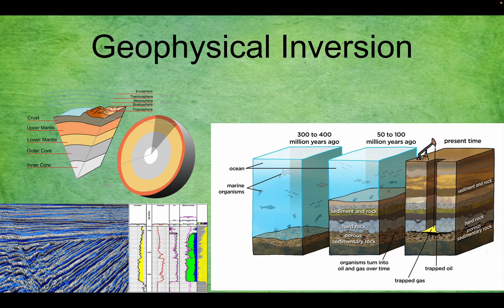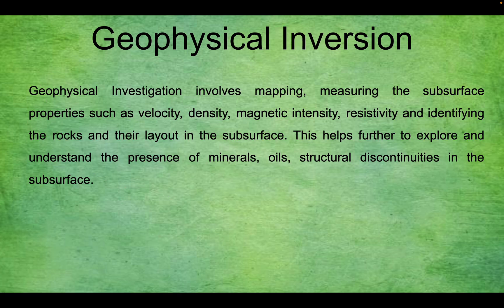So what basically is geophysical inversion? It involves mapping and measuring the subsurface properties such as velocity, density, magnetic intensity, and resistivity, and identifying the rocks which are below the subsurface, which might not always be horizontal.